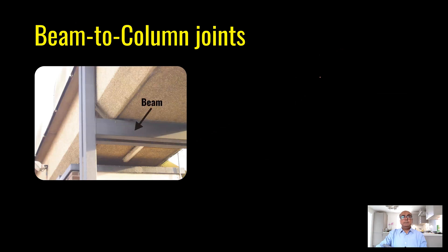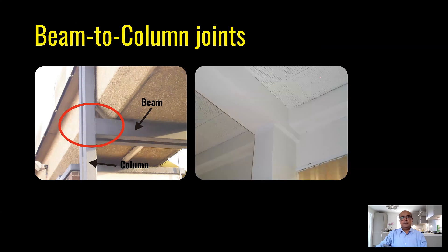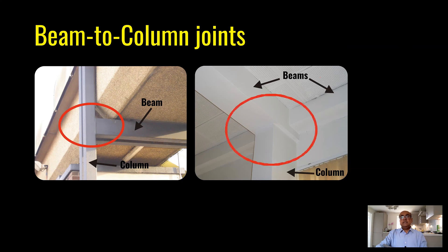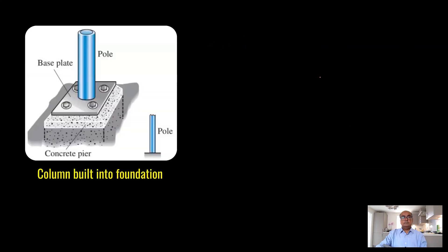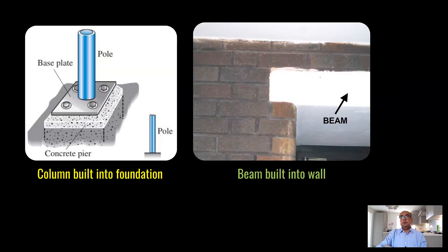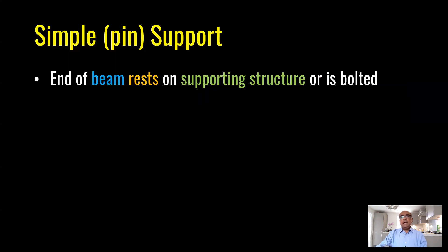Beam-to-column joints: a beam is welded to a column, providing a rigid support. In reinforced concrete, two beams can be rigidly connected to a column. A steel circular hollow section attached to a base plate and built into foundation is another type of rigid or fixed support. A beam built into a wall beam that is completely fixed inside the wall also provides a fixed joint.